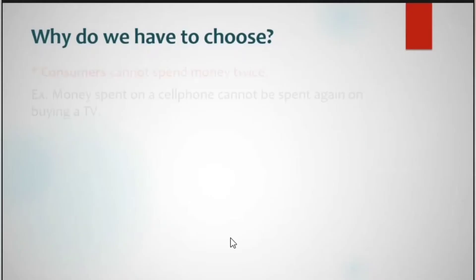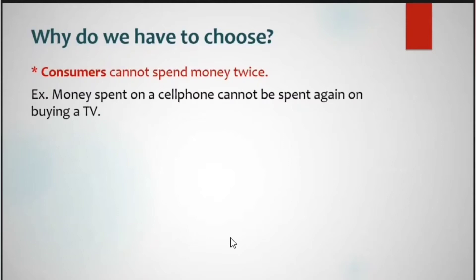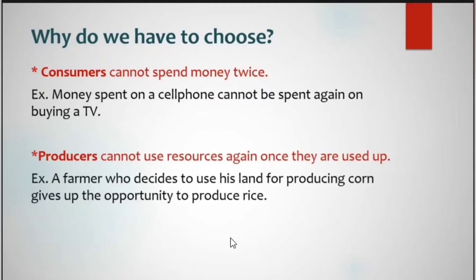Why do we have to choose? Consumers cannot spend money twice — money spent cannot be used again on something else. For example, money spent on a cellphone cannot be spent again on buying a TV. On the other hand, producers cannot use resources again once they are used up. For example, a farmer who decides to use his land for producing corn gives up the opportunity to produce rice.